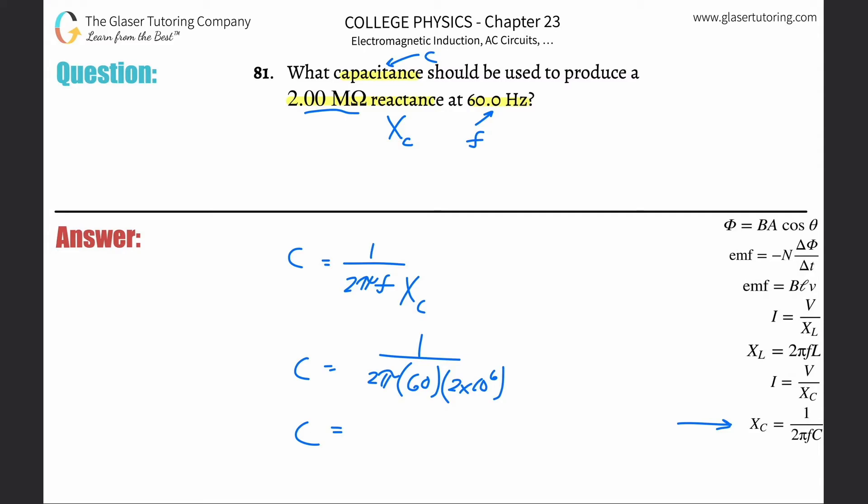So this is going to be 1 divided by 2 pi times 60 times 2 times 10 to the 6th. And this is going to work out to be about 1.33 times 10 to the minus 9th. Times 10 to the minus 9th. And remember, the units of capacitance is farads. And that's that.